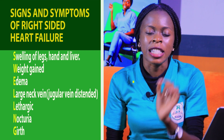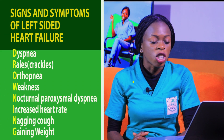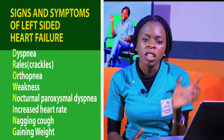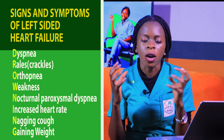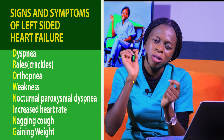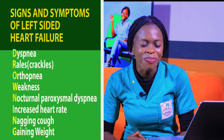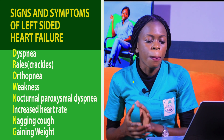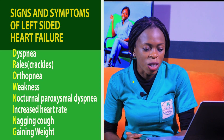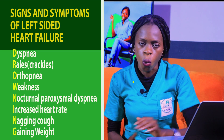For the signs and symptoms of left-sided heart failure, remember the word DROWNING. D — dyspnea, which is difficulty breathing. R — rales, which are crackles heard when you place a stethoscope on the patient's chest. O — orthopnea. W — weakness. N — nocturnal paroxysmal dyspnea. I — increased heart rate. N — nagging cough. G — gaining weight. Remember the word DROWNING for left-sided heart failure.